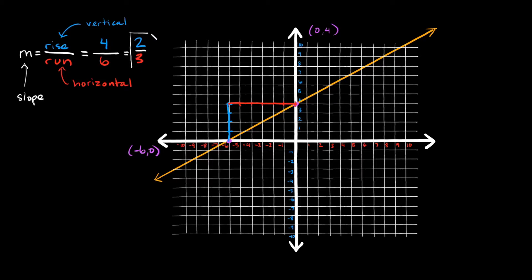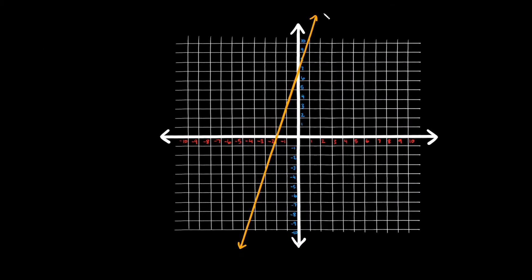The simplified slope of two over three still works. Going back to our graph, starting from our point, if we go up two and then over three — one, two, three — the line also hits that new point. So we can use either two over three or four over six and still land exactly on this line.